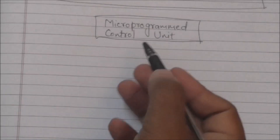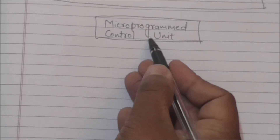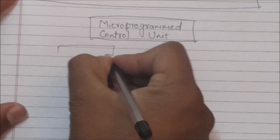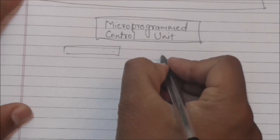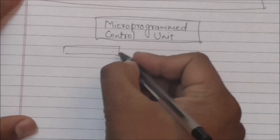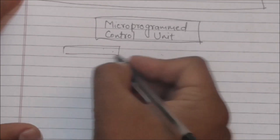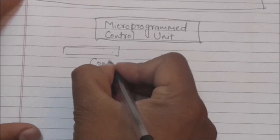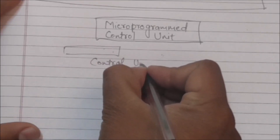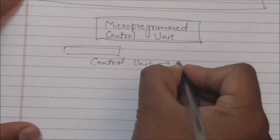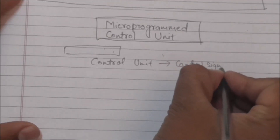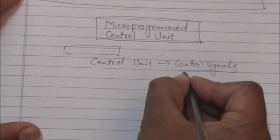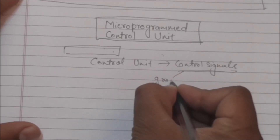Welcome back. In this tutorial we will study about the micro-programmed control unit. To execute a computer instruction, a sequence of micro-operations are to be performed. To perform these micro-operations, a control unit generates control signals. These control signals are a group of bits.